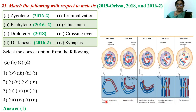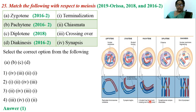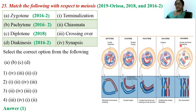During leptotene stage, condensation or compaction of chromosomes takes place. During zygotene stage, formation of synaptonemal complex takes place and synapsis begins. During pachytene stage, the bivalents which are formed undergo crossing over. Recombination occurs during this pachytene stage between the non-sister chromatids. Diplotene stage is where dissolution of synaptonemal complex takes place, and as a result, X-shaped chiasma is formed. The final stage is known as diakinesis.